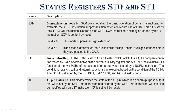TC is the test or control flag bit. TC is set to 1 if a bit tested by the BIT or BITT instruction is 1. TC is also set if a compare condition tested by CMPR exists between the current auxiliary register and AR0, or if the exclusive OR function of the two MSBs of the accumulator is true as tested by a NORM instruction.